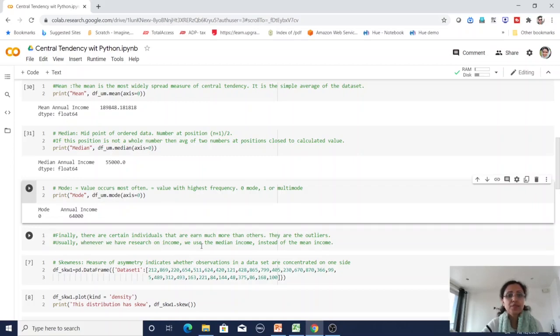Finally, there are certain individuals that earn much more than others - they are outliers. Usually whenever we have research on income, we use the median income instead of mean income. Let's move on to the slide.